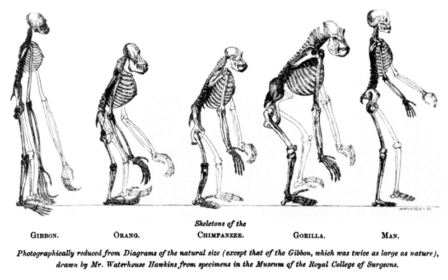The extended argument on the ape brain — partly in debate and partly in print, backed by dissections and demonstrations — was a landmark in Huxley's career. It was highly important in asserting his dominance of comparative anatomy, and in the long run more influential in establishing evolution amongst biologists than was the debate with Samuel Wilberforce. It also marked the start of Owen's decline in the esteem of his fellow biologists.